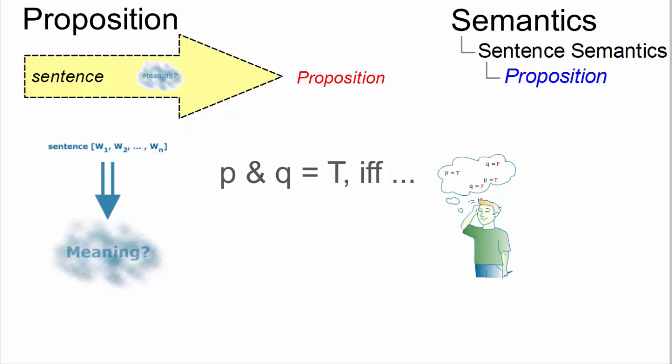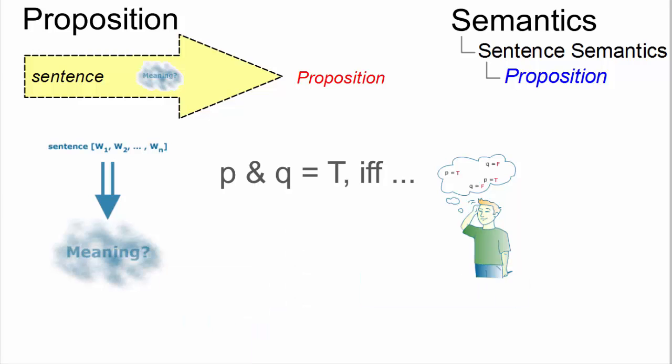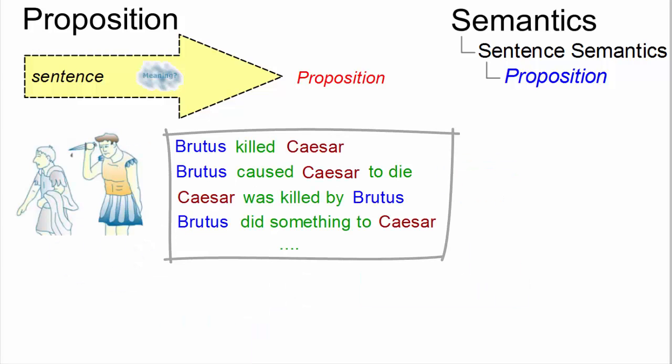One argument in favor of using such an abstraction is that different sentences may be converted into identical propositions. Here are some examples. These sentences have the same meaning. This meaning is defined in terms of so-called propositions.